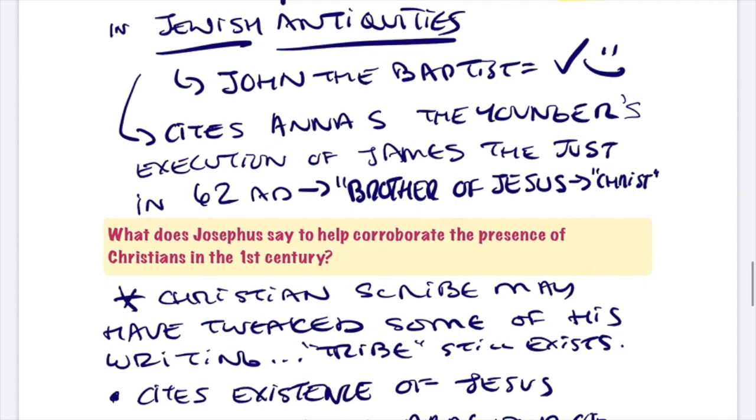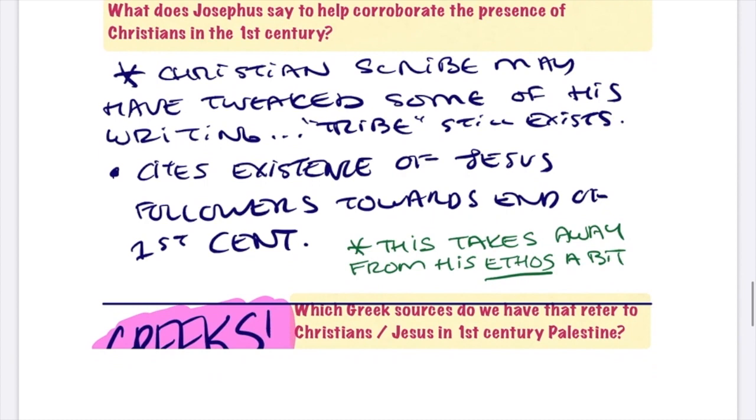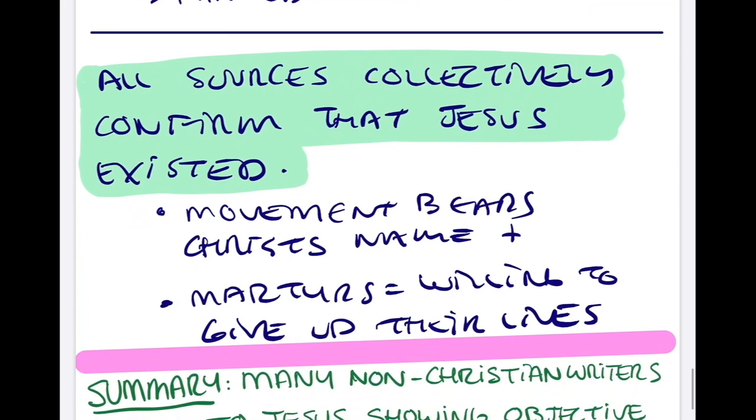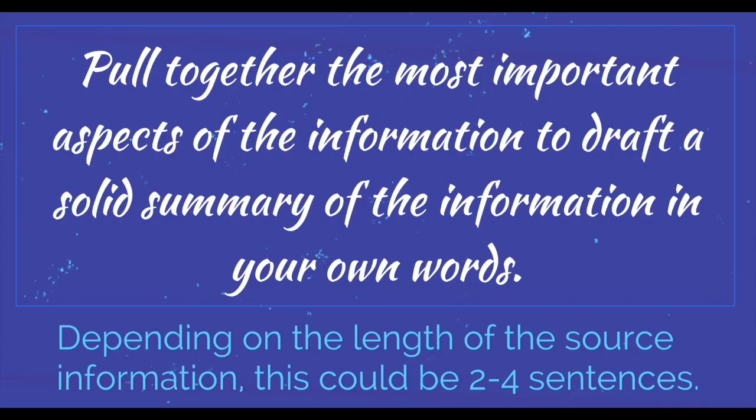The fourth phase of the focus note-taking process is when we summarize and reflect on our learning. We reflect on everything we've learned and annotated, then create a summary in our own words to really solidify everything we've learned through this activity. Once you've finished writing your summary at the end of your notes, you have completed the fourth phase of the focus note-taking process.